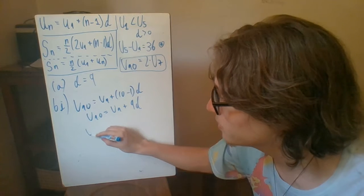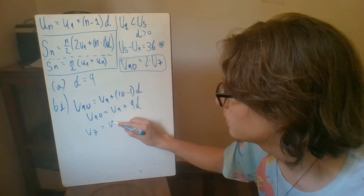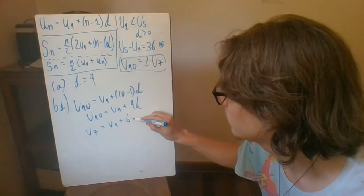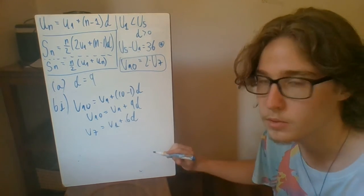If we do the same for u7, I'm going to do it a little bit faster this time, we end up with u1 plus 6d.